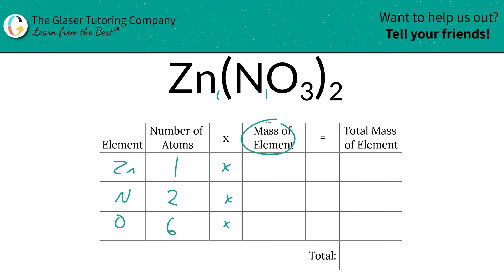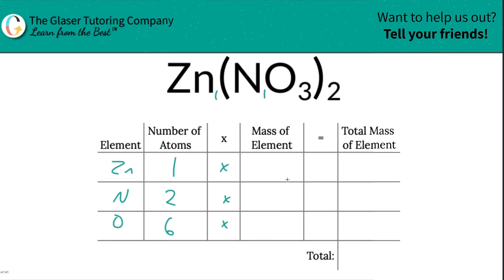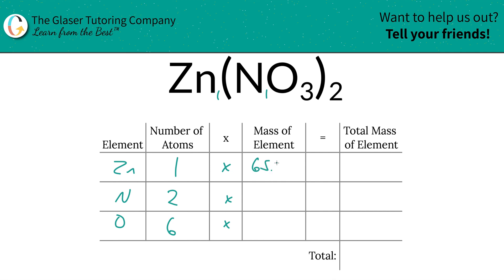Then you're simply going to take those number of atoms and multiply it by the mass of each. These masses are always found on the periodic table. So zinc's mass is going to be 65.38, nitrogen is 14.01, and oxygen is 16. So let's write them down: 65.38 for zinc, nitrogen is 14.01, and oxygen is going to be 16.